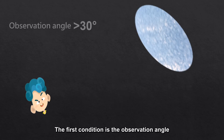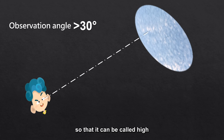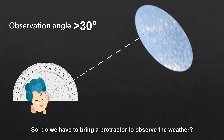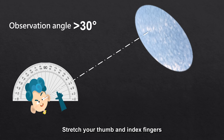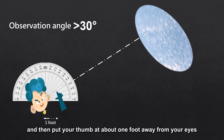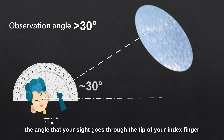The first condition is the observation angle. I always say the very high Stratocumulus — so how high is it? At least we have to raise our head to see it, so that it can be called high. How high should we look up? About 30 degrees. So do we have to bring a protractor to observe the weather? No need. First, extend your hand, stretch your thumb and index fingers, and then put your thumb at about 1 foot away from your eyes. The thumb should be at eye level. When you look up slightly, the angle that your sight goes through the tip of your index finger is about 30 degrees.